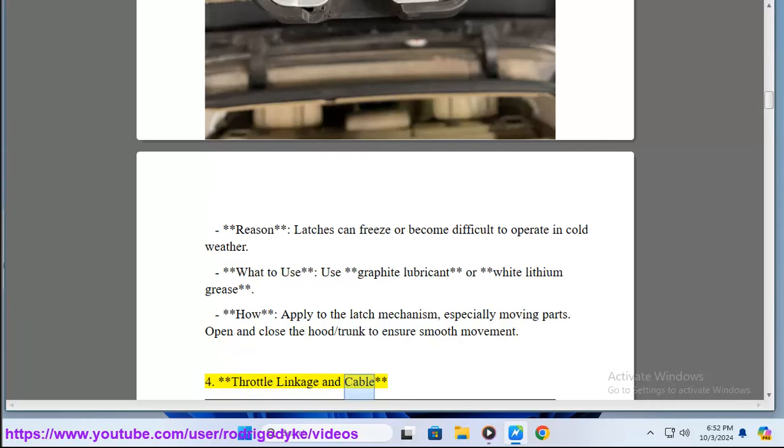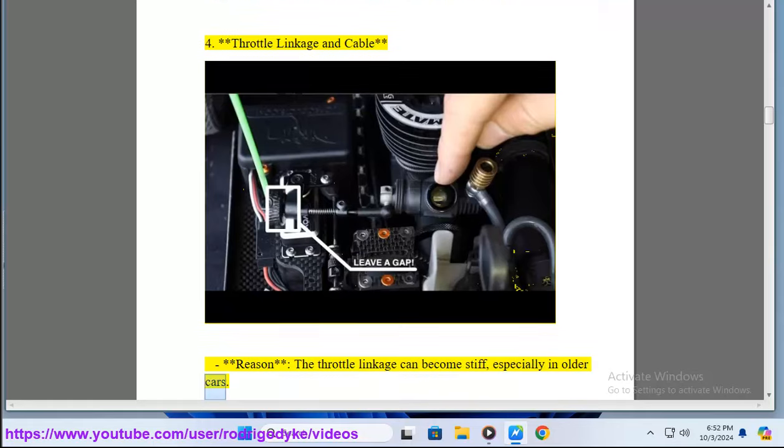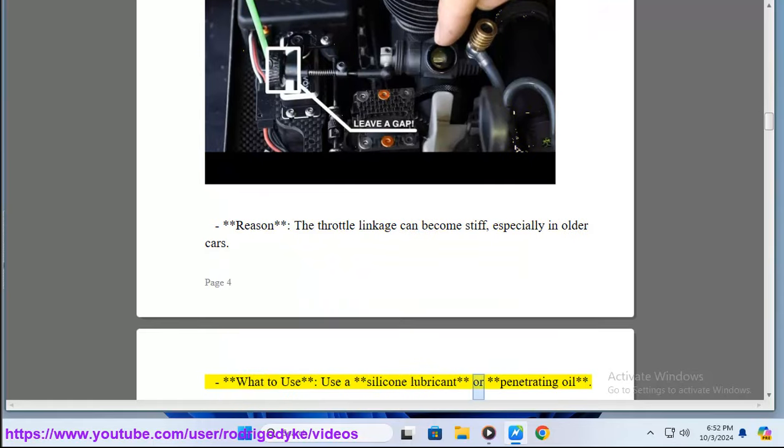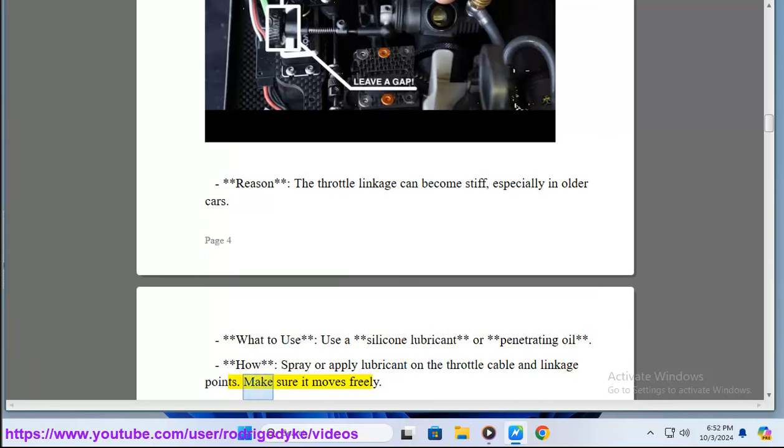4. Throttle Linkage and Cable. The throttle linkage can become stiff, especially in older cars. What to use? Use a silicone lubricant or penetrating oil. How? Spray or apply lubricant on the throttle cable and linkage points. Make sure it moves freely.